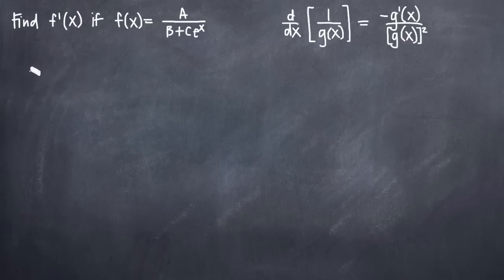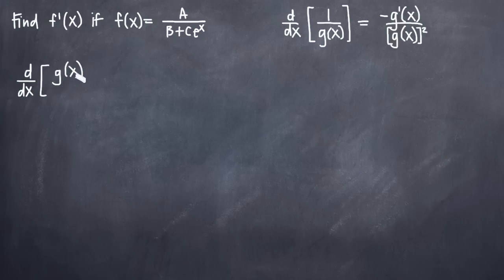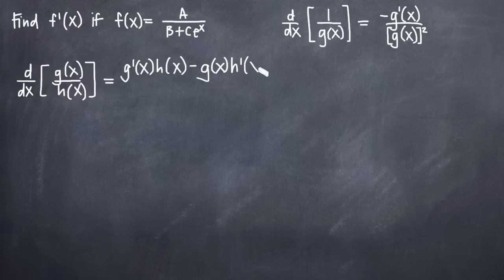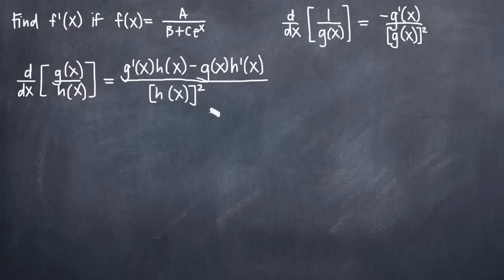The quotient rule formula tells us that if we want to take the derivative, d dx, of a quotient of two functions — say g of x divided by h of x — the formula we use is: g prime of x times the original denominator, minus the original numerator times h prime of x, the derivative of the denominator, all divided by the original denominator squared. This is our quotient rule formula.